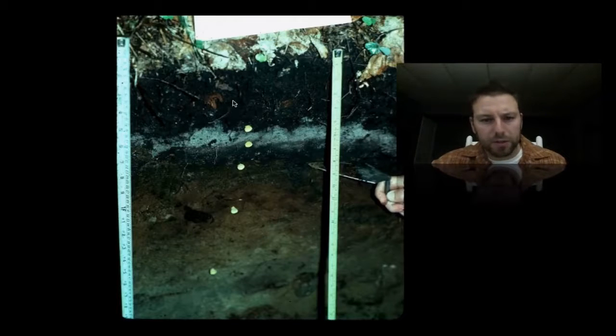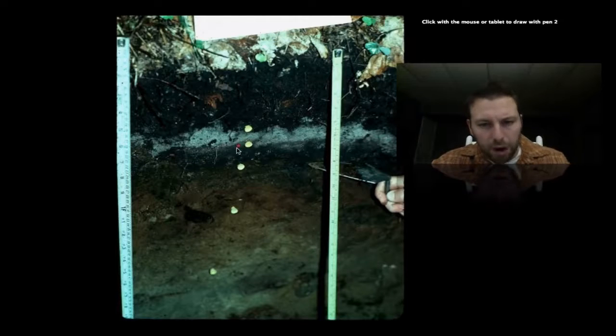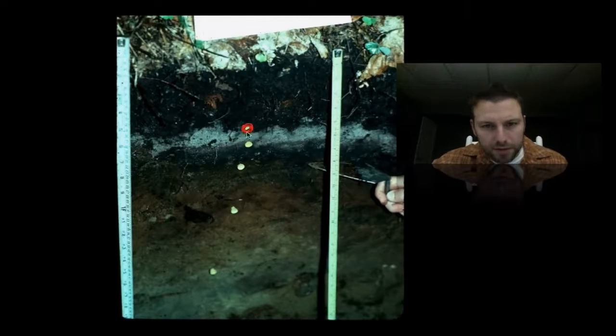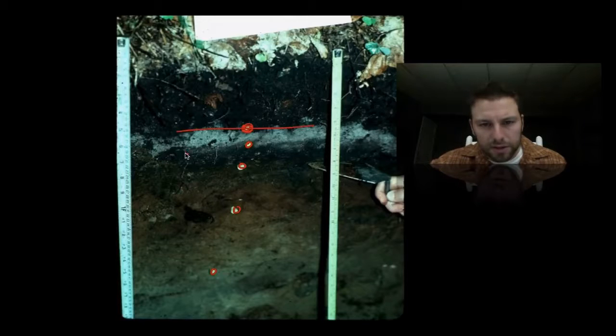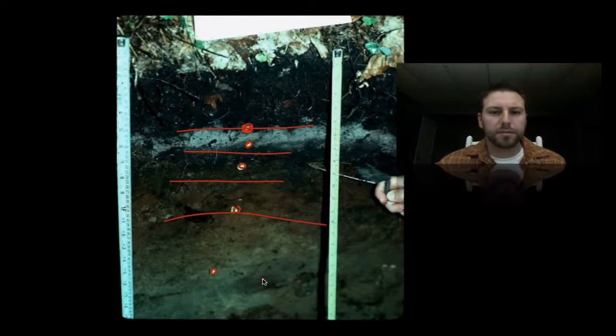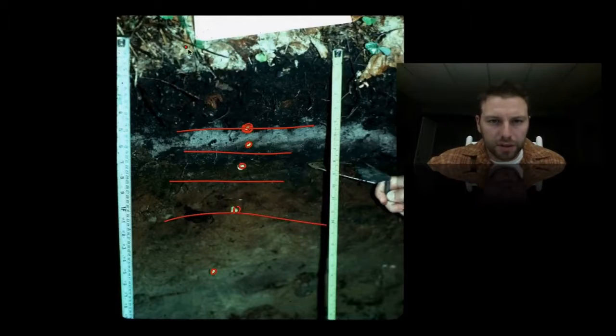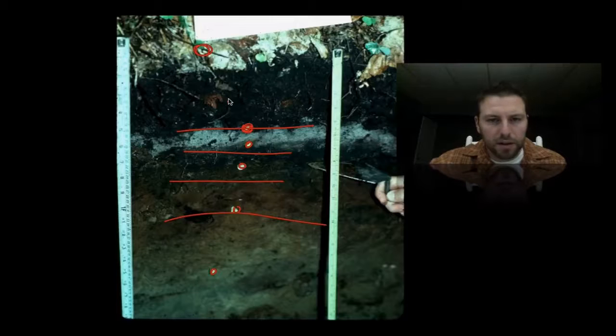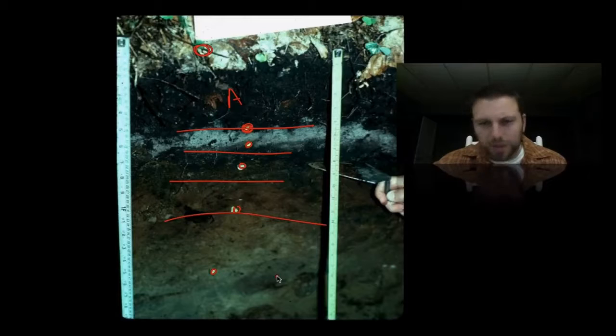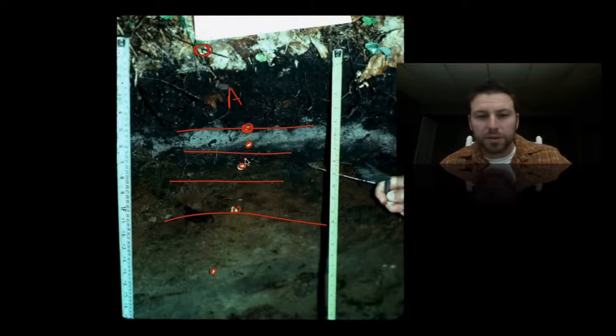This person made a cross section and marked the different horizons. You can see with these little Ts they marked the number of different soil layers. We have our organic layer right here, A for topsoil, B, C, and the D is way down here. They're probably a couple layers off, but there's definitely distinguished differences between these.